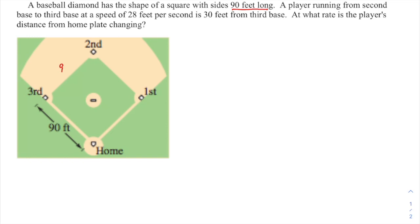Okay, there we go. Yep, that's a person running—that's a perfect drawing. A person is running at a speed of 28 feet per second and is 30 feet from third base. So that's talking about a split second, a moment. At what rate is the player's distance from home plate changing?